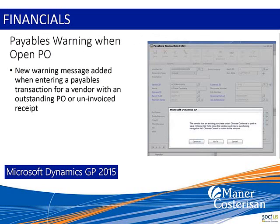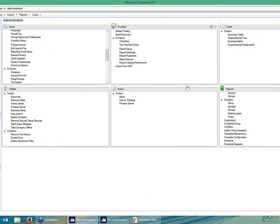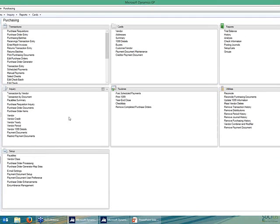Another thing added in financials — borderline financials or distribution — is a warning message. If you start to enter a payables transaction for a vendor that has an open receipt — a purchase order and a receipt — it will warn you. We've seen many times where an invoice comes in and the accounts payable person doesn't realize that invoice might actually be attached to a purchase order or receipt. They enter the payable, cut the check, the vendor is happy, but then you're left with an outstanding receipt that has never been invoiced, which causes balancing problems.